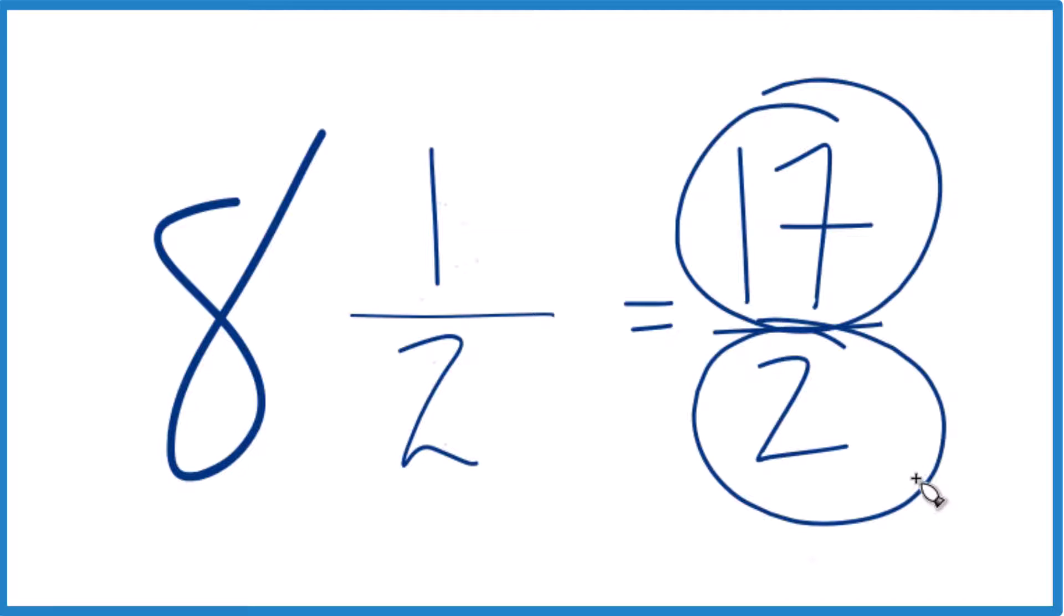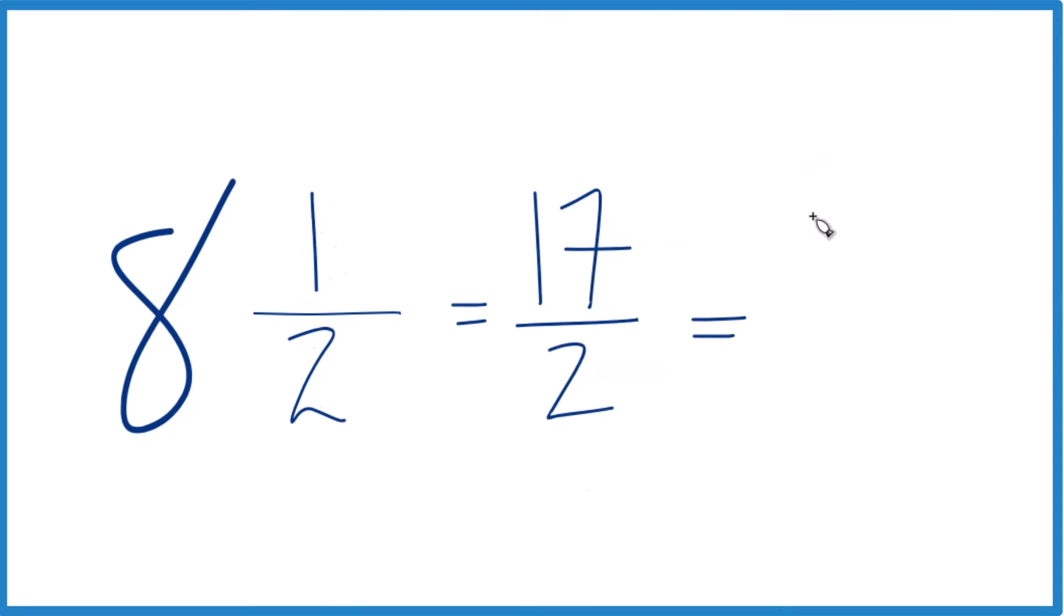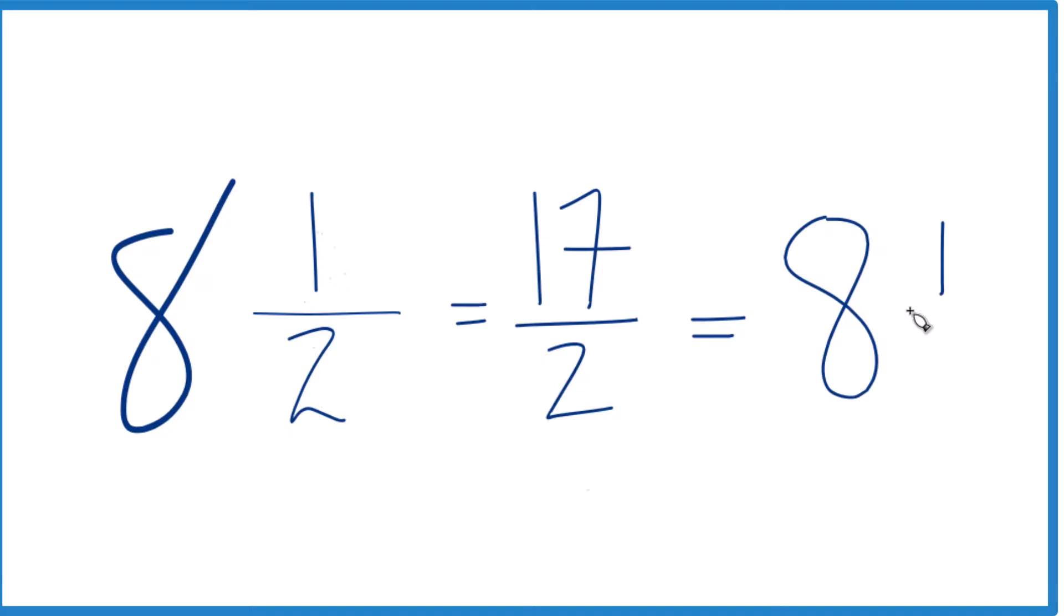We can also check our work here, because 2 goes into 17, 2 times 8, that's 16, and 1 left over there. So we just put it here, bring the 2 across, and 8 and 1 half is what we started with, so we know we did this correctly.